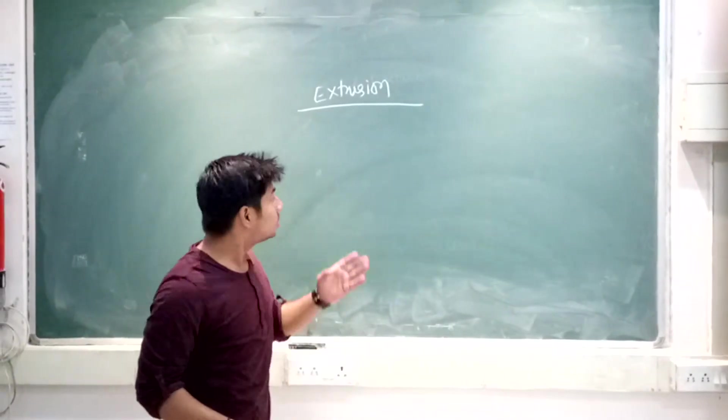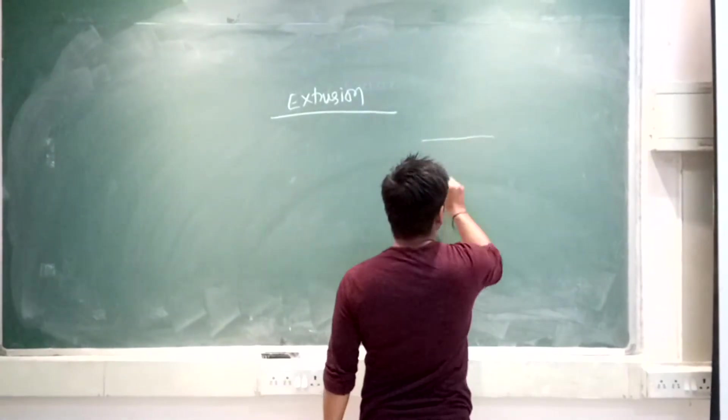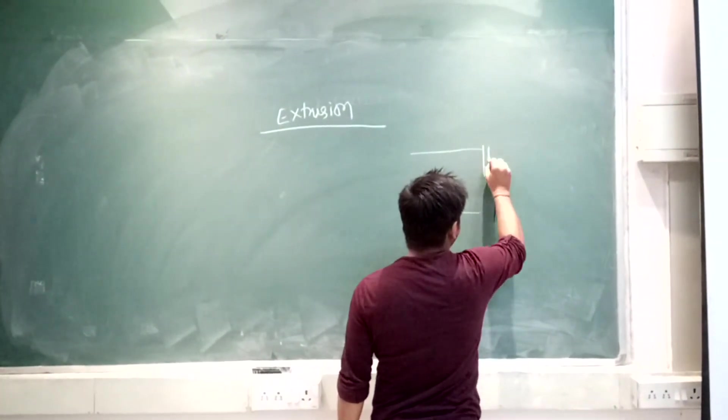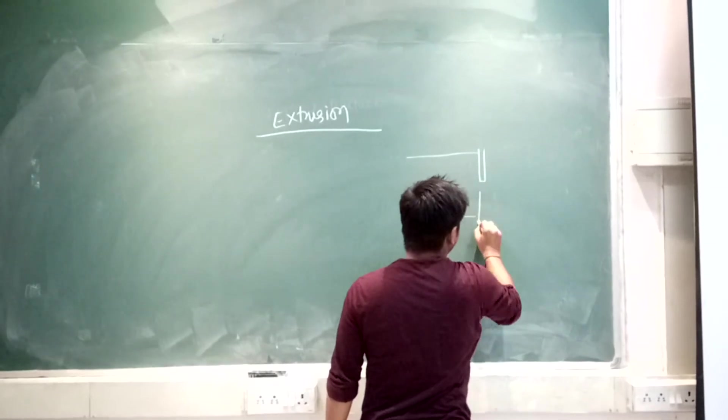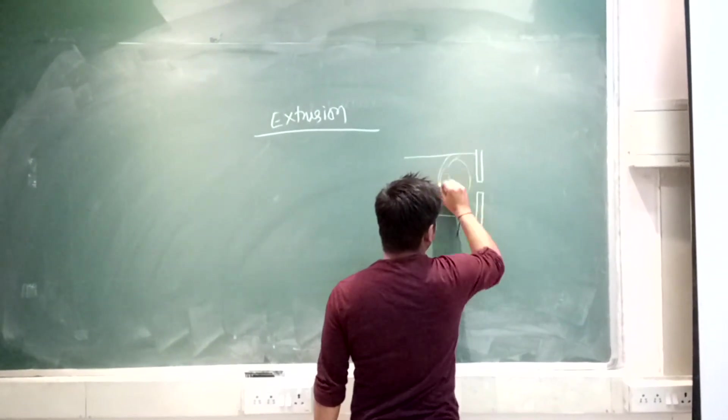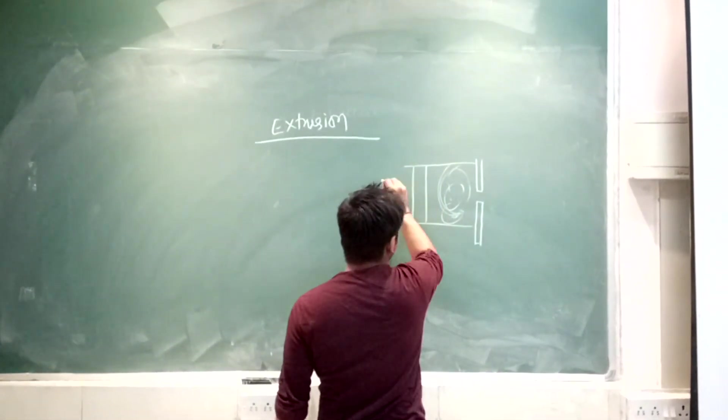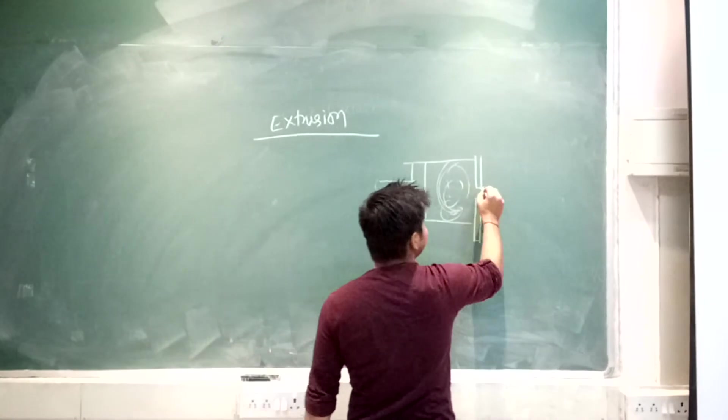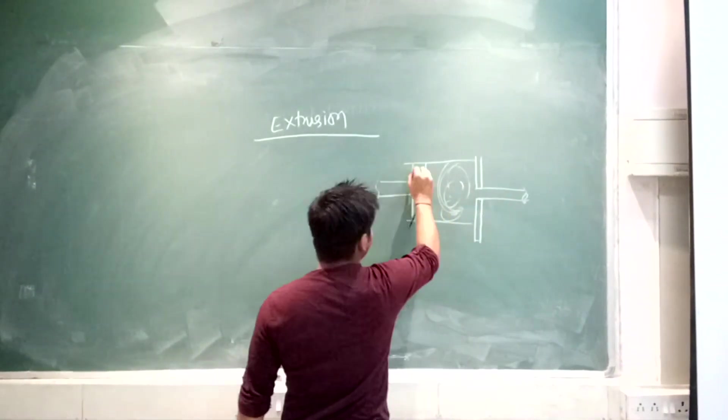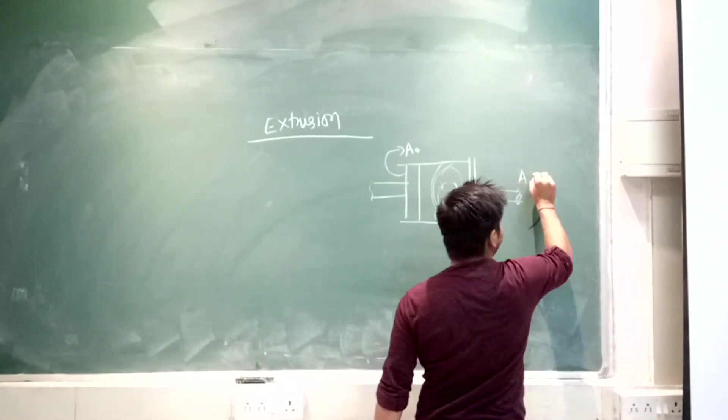At first I would like to introduce extrusion. Extrusion is something like this - this is a die, and we just put the metal here and compress it. Triaxial compression is there and from here you will get the product. This area is A₀, the initial area, and this is the final area of the product.